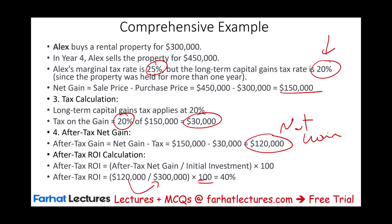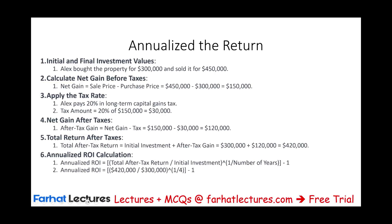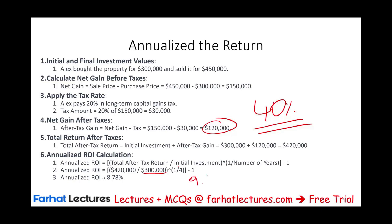Since 40% covers four years, it's not directly comparable to other investments. To annualize: take $120,000 / $300,000 raised to the power of 1/4, then subtract 1. This gives an annualized after-tax return of 8.78% per year. Comparing to Emily's 9.14% annual return, Emily did better. Now both returns are expressed in the same annual terms and are properly comparable.